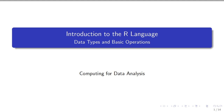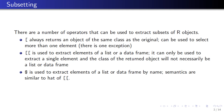There are a couple of different operators that you can use to extract subsets of R objects. There's the single square bracket, the double square bracket, which we saw in the previous video, and there's the dollar sign. The basic principle to remember is that the single square bracket always returns an object of the same class as the original.